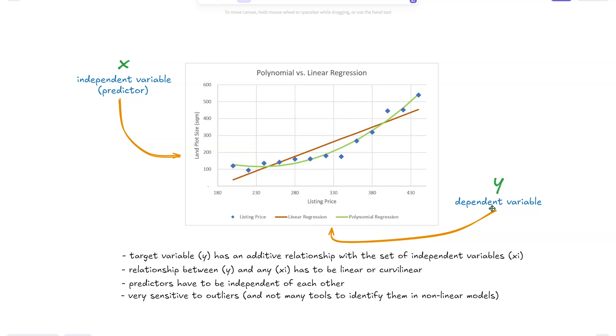For example, here we have the dependent variable, a listing price for properties, and the land plot size being the independent variable. We're trying to see how the size of the land plot influences the listing price. We have some data points, and you see here that a linear regression, although it seems that it's working, actually when we plot a polynomial regression, we see that it's much better at fitting our data set.